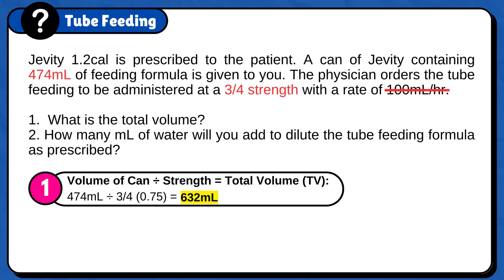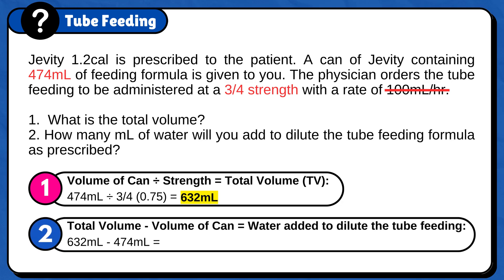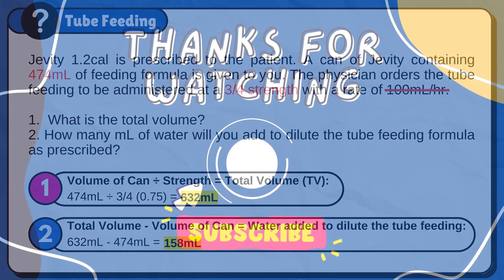The second question is asking how many ml of water you will add to dilute the tube feeding formula as prescribed. For this problem, you just need to subtract the volume of the can from the total volume. 632 ml minus 474 ml is 158 ml. Therefore, 158 ml is the amount of water you will add to dilute the tube feeding formula.